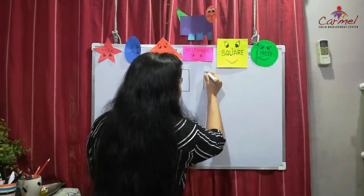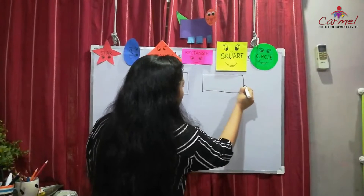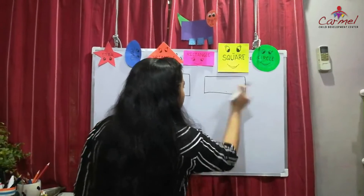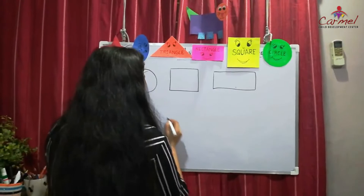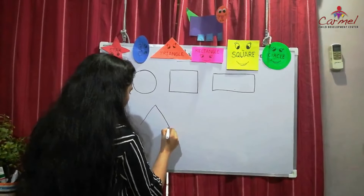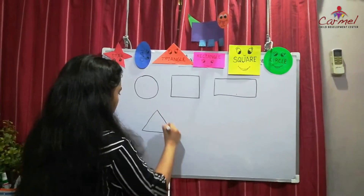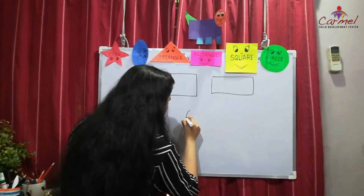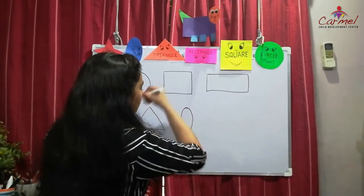Now we are going to draw the rectangle shape. You can see the rectangle has two short sides and two long sides — both long and short. Now let's draw the triangle shape — in the triangle, three sides are equal. Now let's draw the oval shape — as I already said, it looks like an egg.